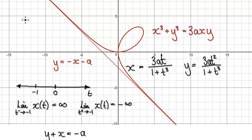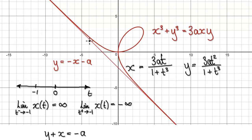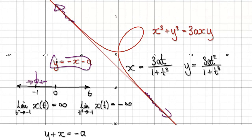We need to show two things: first, that the gradient of this volume equals -1 as t heads towards -1 from the left-hand side and also from the right-hand side, because the gradient of the straight line is -1. The other thing is we need to show that as t heads towards -1, the particle will act like this straight line.